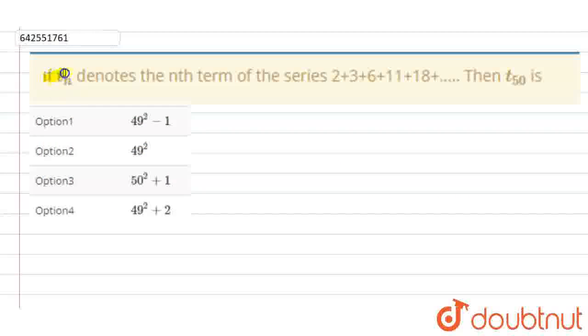Hello students. The question is: if Tn denotes the nth term of the series 2, 3, 6, 11, 18, and so on, then what is T50? These are the options.